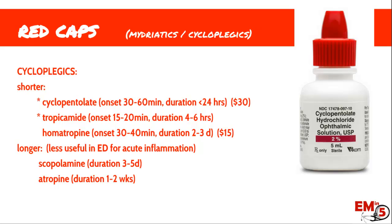Cycloplegics come in red tops. There are shorter-acting and longer-acting options. We're going to be using the shorter-acting ones in the ER — the long-acting ones last up to a couple of weeks, which isn't really something we'll use. The top one I use is cyclopentolate; it lasts about a day and costs around $30. Home atropine is a little cheaper, around $15 for the generic. I'm listing dollar amounts because some of these can be very expensive, and you have to be careful that your patients are actually going to be able to fill the prescriptions.